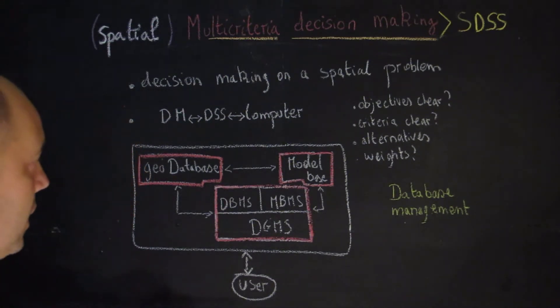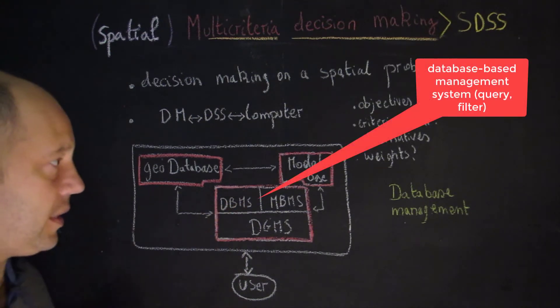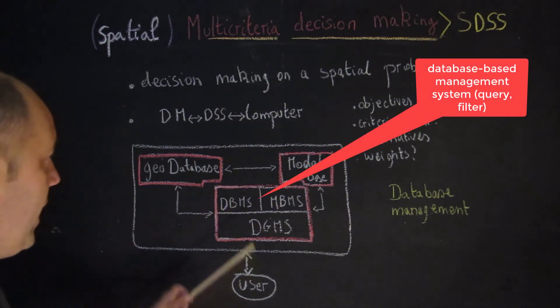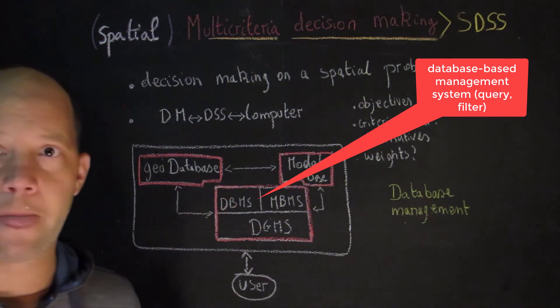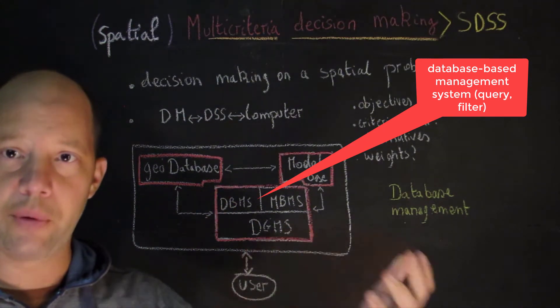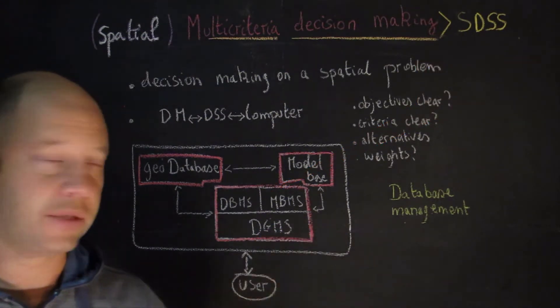The second part is the database management system. You are quite familiar with that in a GIS because you can conduct queries, you can filter data and so on and so forth.